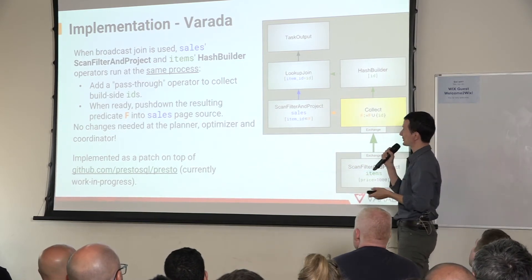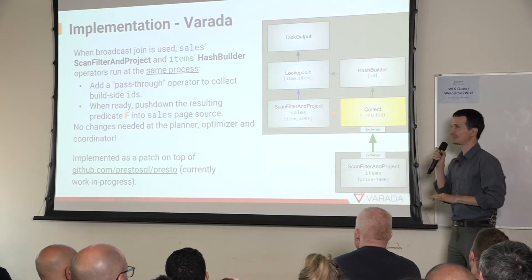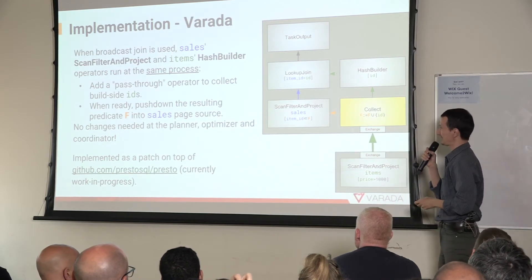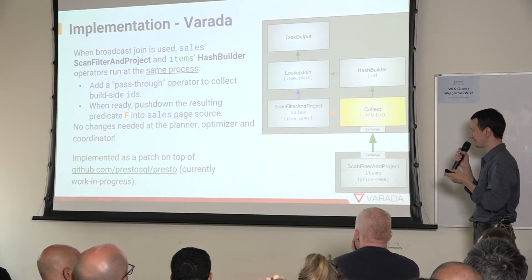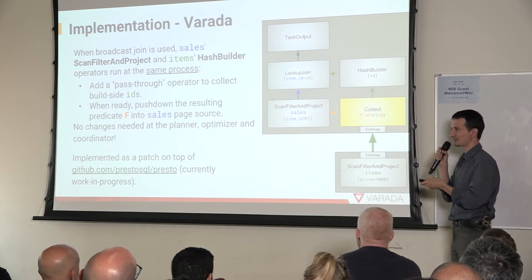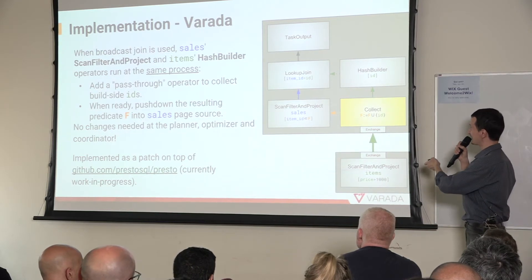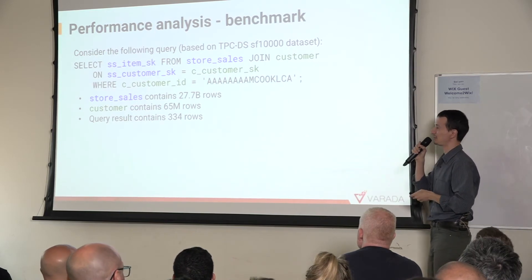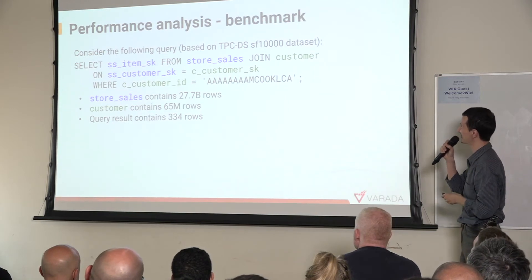We implemented it as a patch on our fork of the Presto repository and tested it on an interesting use case. For the analysis, we took the TPC-DS dataset — one of the largest benchmarks — where the sales table is quite large, containing 27 billion rows.